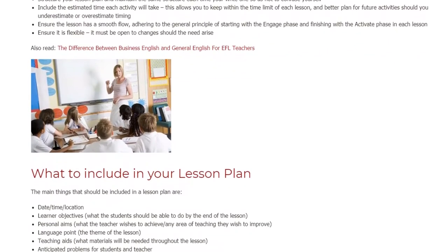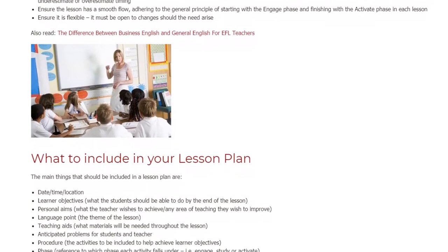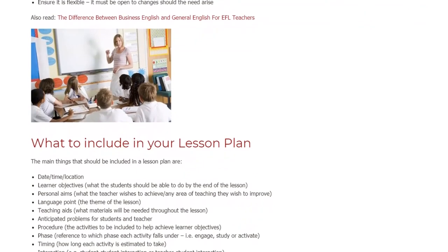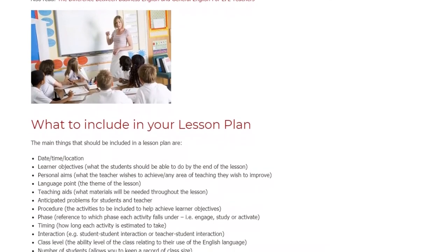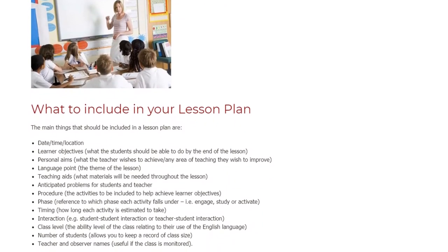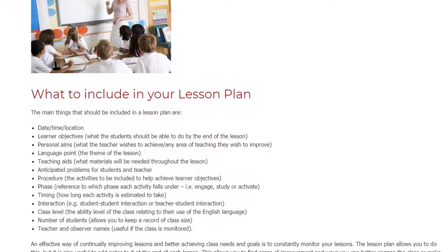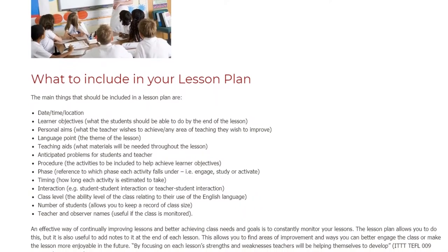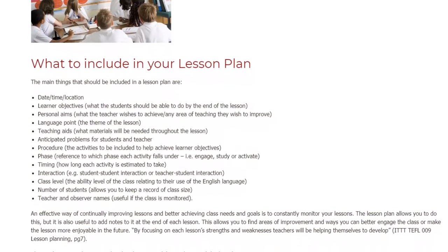What to include in your lesson plan. The main things that should be included are: date, time, or location; learner objectives — what the students should be able to do by the end of the lesson; personal aims — what the teacher wishes to achieve and any area of teaching they wish to improve; language point — the theme of the lesson; teaching aids — what materials will be needed throughout the lesson; anticipated problems for students and teacher; and procedure — the activities to be included to help achieve learner objectives.